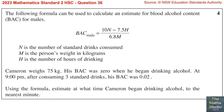Question 36. The following formula can be used to calculate an estimate for blood alcohol content (BAC) for males: BAC male equals 10N minus 7.5H over 6.8M, where N is the number of standard drinks consumed, M is the person's weight in kilograms, and H is the number of hours of drinking. Cameron weighs 75 kilograms. His BAC was 0 when he began drinking alcohol at 9 p.m. After consuming three standard drinks his BAC was 0.02. Using the formula, estimate at what time Cameron began drinking alcohol.